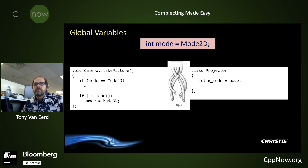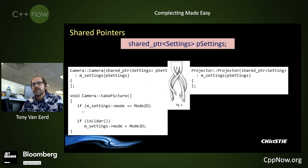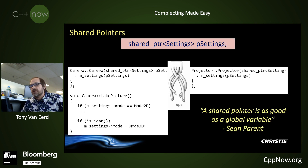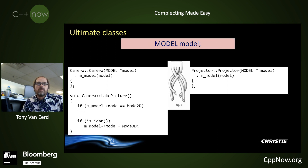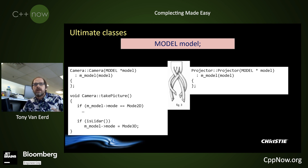What's the next best thing to a global variable? Shared pointers. You do the same process — maybe in the constructor they get handed a shared pointer, and then they can both read it, both write it, do everything. As someone said, a shared pointer is as good as a global variable. And you don't need shared pointers — you could use raw pointers. In our codebase we have a class called 'model,' basically a document class that holds everything.